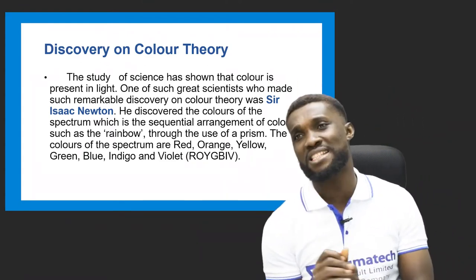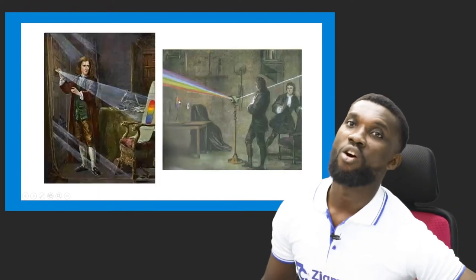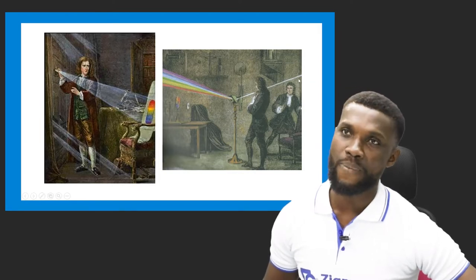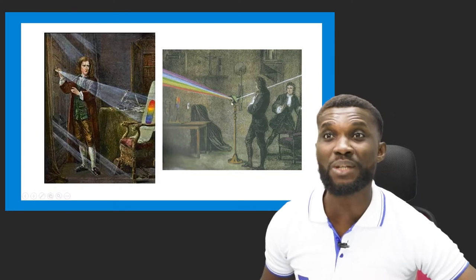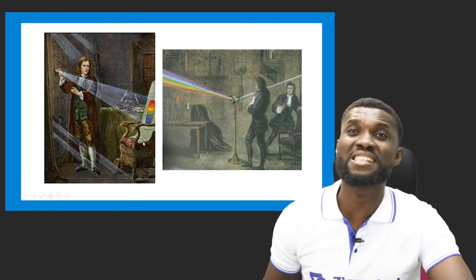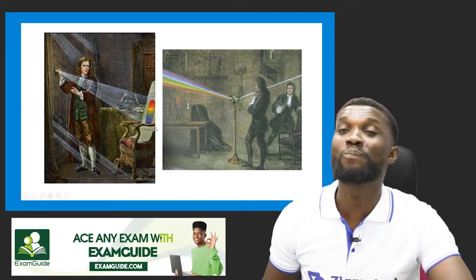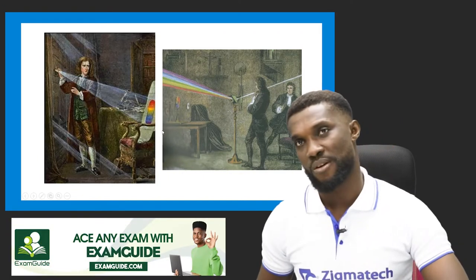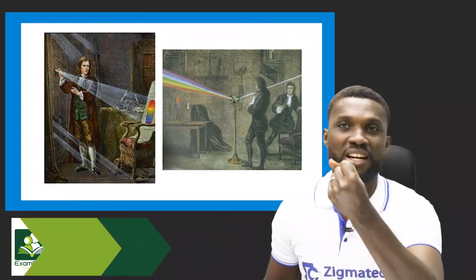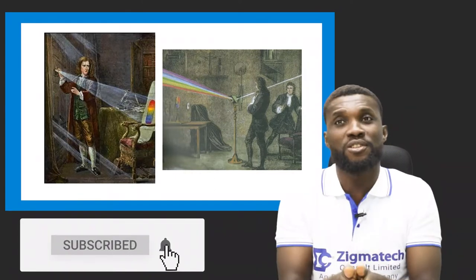Inside these seven colors, you can create a million billion colors. Isaac Newton allowed white light to pass through this glass prism — it reflected the seven colors of the rainbow in the spectrum. That's exactly the practical Isaac Newton did to prove that color is an illusion, a ray of light. It's not a thing — it's something you perceive with your eyes. What you can touch is the color pigment.